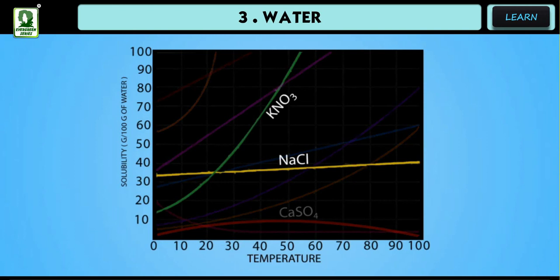The solubilities of some substances like CaSO4 increase with the rise in temperature and then decrease.